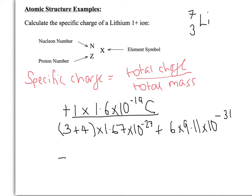And if you plug all those numbers in, you should come out with an answer of 1.4 times 10 to the 7 units of coulombs per kilogram.